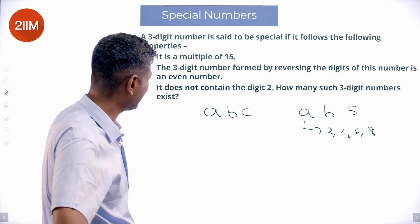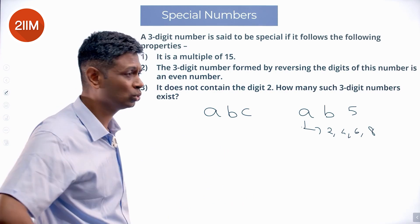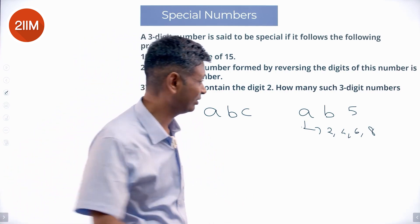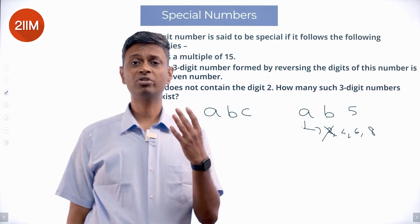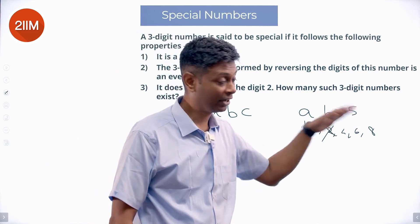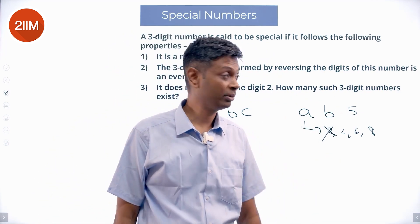Let's go to the last condition. It does not contain the digit 2. Even this is eliminated. So A can only be 4, 6, or 8. C can only be 5. And we have this number that has to be a multiple of 3.